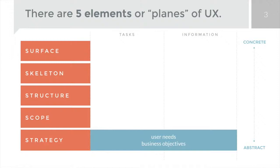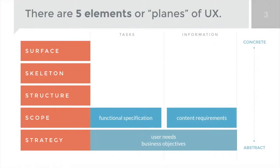On the next plane, scope, we're talking about two discrete things. On the task and software side, we have functional specifications, which describe the features and functions of the product — what does it offer and what is it able to do? On the information side, we have content requirements, which essentially means what content is required, what information, what data needs to get served up that people can manipulate and interact with.